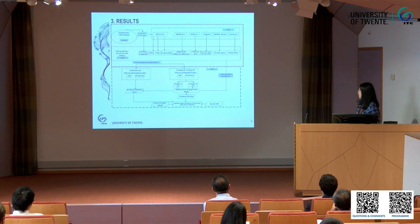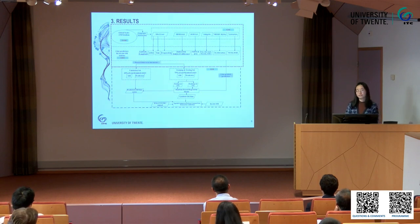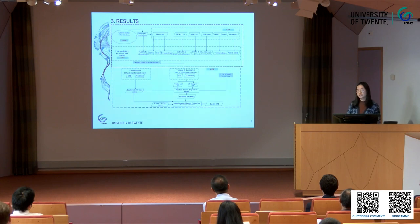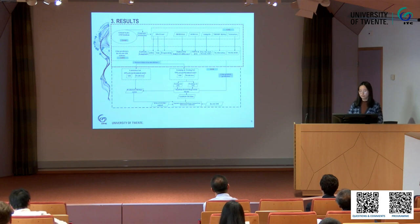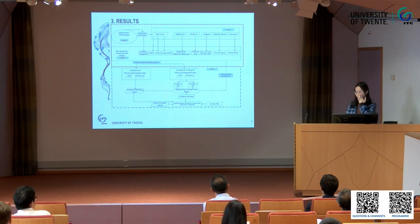Let me briefly introduce our framework. First, we extract land surface features from Google Earth Engine at in-situ soil moisture stations to get training and testing data. Then we train the model on Google Earth Engine and produce the one kilometer soil moisture prediction.